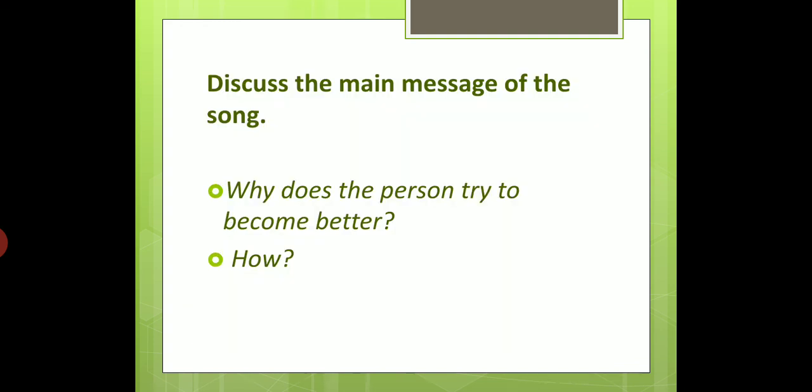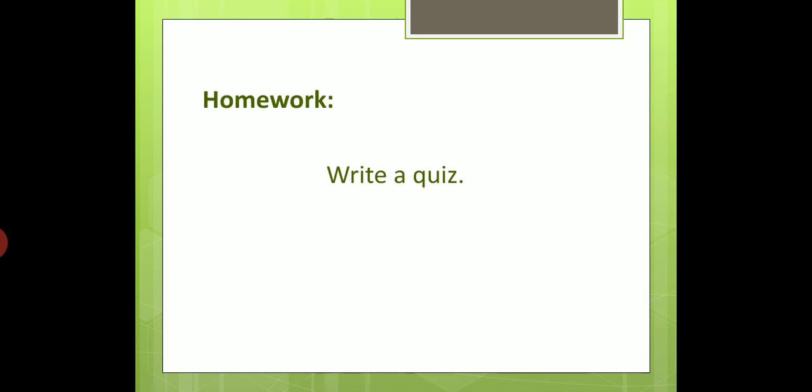Let's discuss the main message of the song. Why does a person try to become better? How does the singer try to become better? Because he wants to be fit and healthy and he wants to win races. He does it by training a lot, eating healthy, and getting enough sleep. Thank you for your concentration. Now let's write down your homework. Your homework is to write a quiz. Today we revised what you have learned in this module and we did a quiz. At home, look through the module and write quiz questions, then report your quiz to the class. Thank you for your attention. Goodbye.